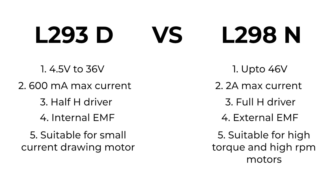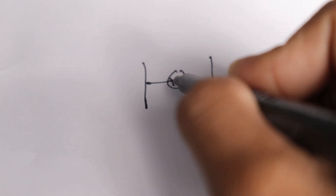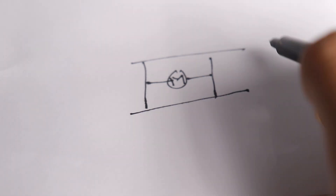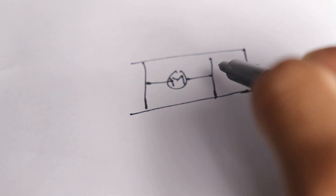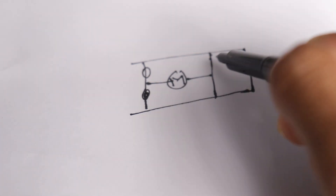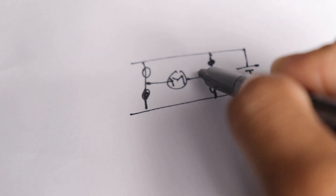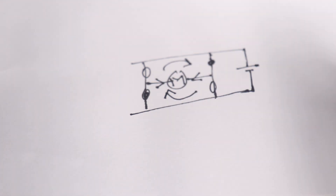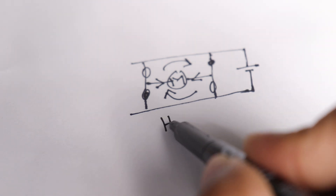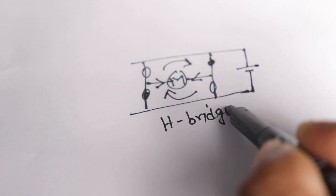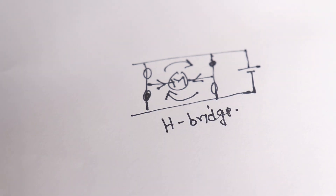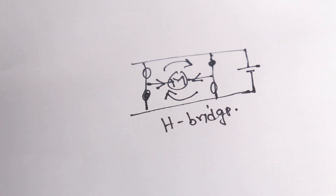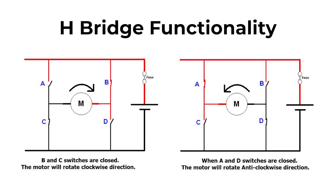If you are wondering what an H-bridge is — an H-bridge is basically a circuit which enables voltage to be applied across a load in both directions. It allows full command over standard electric DC motors, so that a microcontroller, logic chip, or even a remote control can command the motor to go forward, backward, brake, or even coast. H-bridges are available as integrated circuits but can also be built using discrete components.